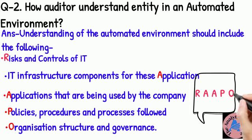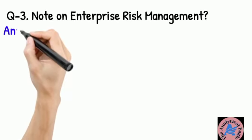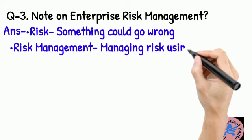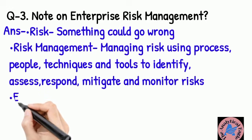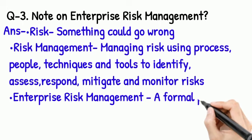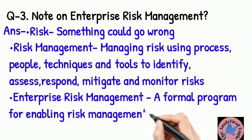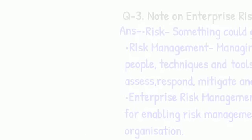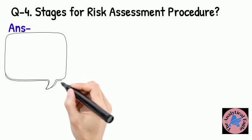Question 3: What is Enterprise Risk Management? Risk is the thinking that something could go wrong. Risk management is managing, mitigating and accessing that risk — identifying and mitigating those risks using techniques and people. Enterprise Risk Management is a formal program for enabling the risk management process in an organization.